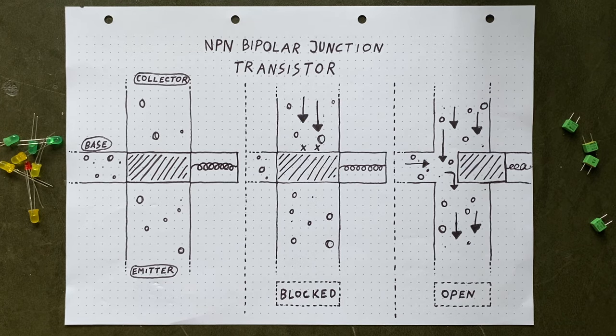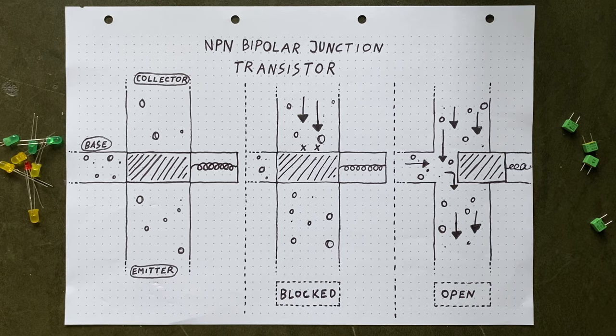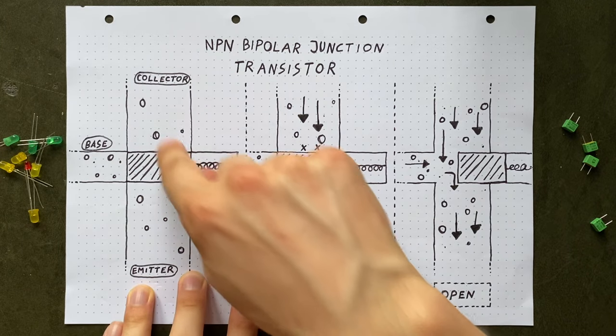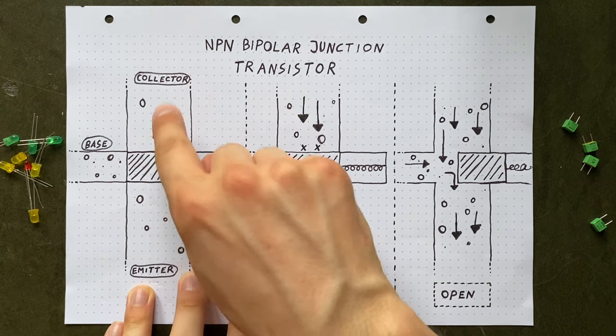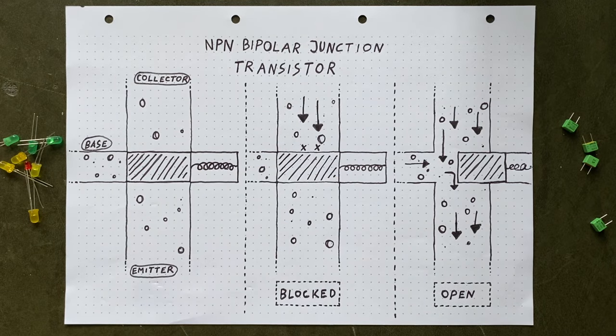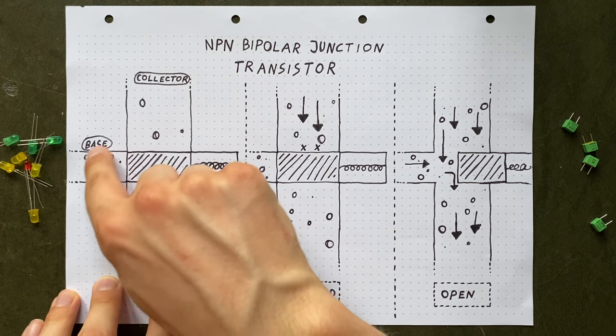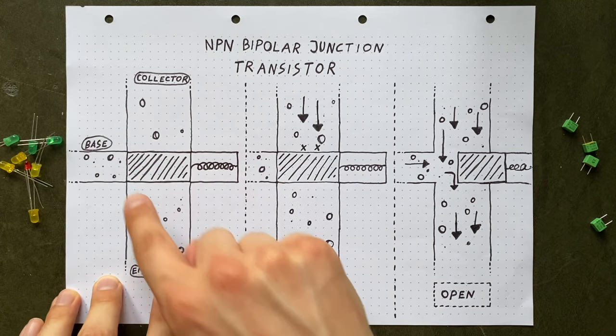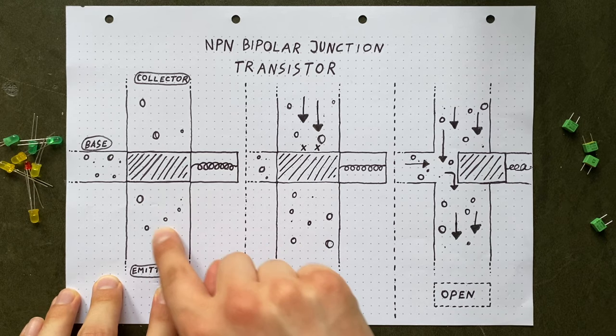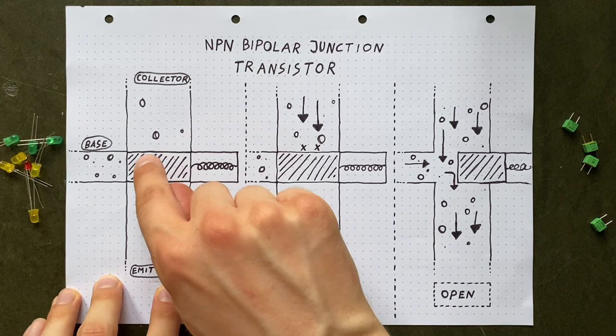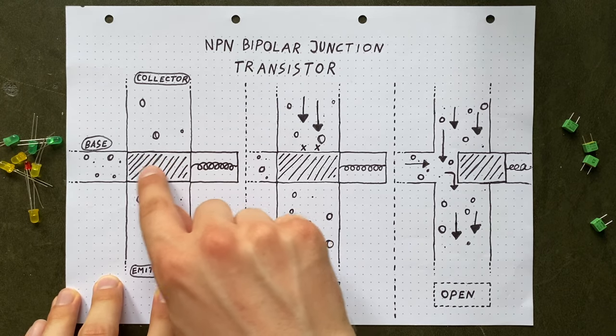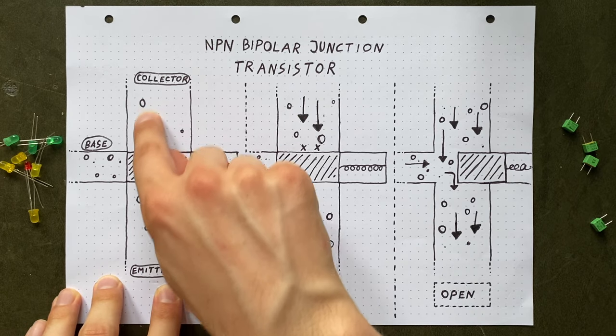And our water analogy might get pushed a bit beyond its limits here, but let's try to apply it nonetheless. So imagine we have a T-shaped joint where two pipes meet looking like this. There's three openings. This one we call the collector, this one is the base, and this one down here is called the emitter. Right in the middle we have this seal blocking any water flow from here to here.